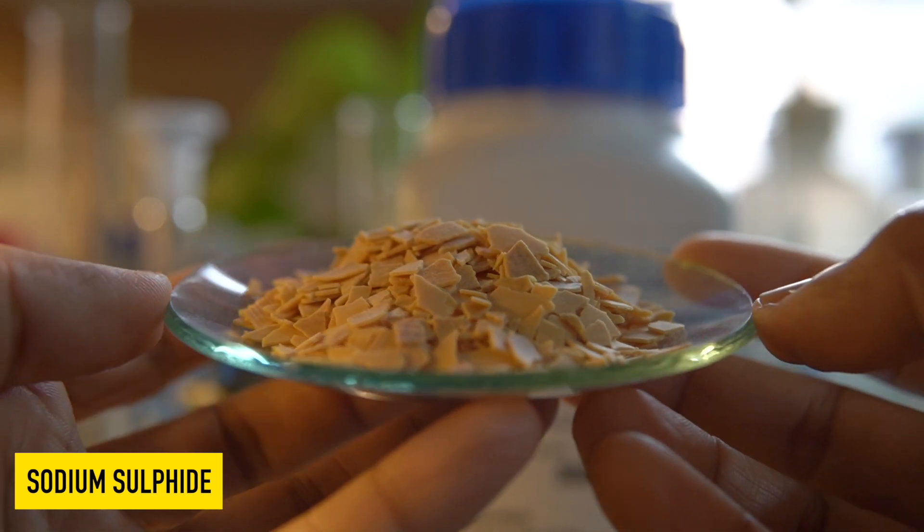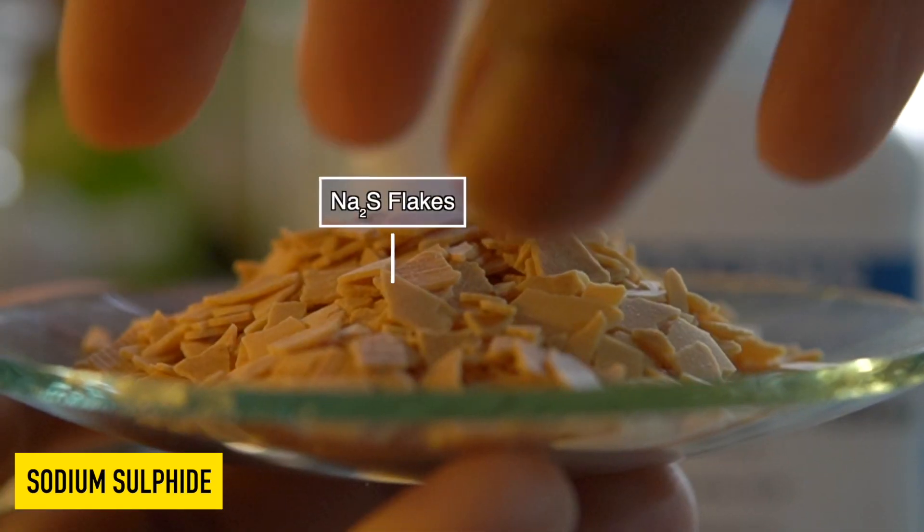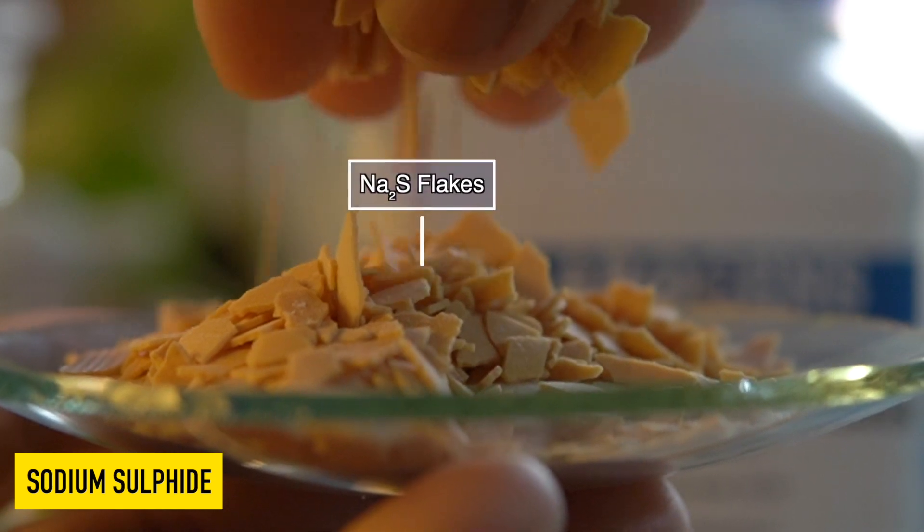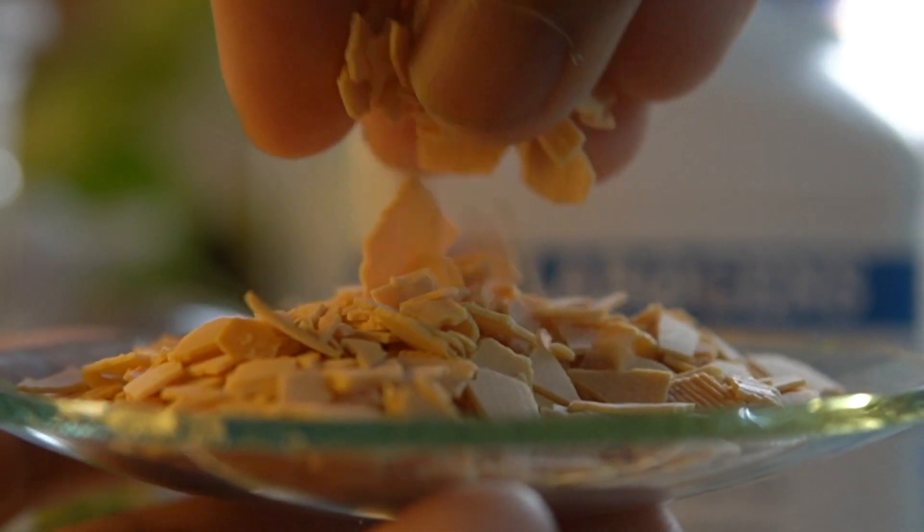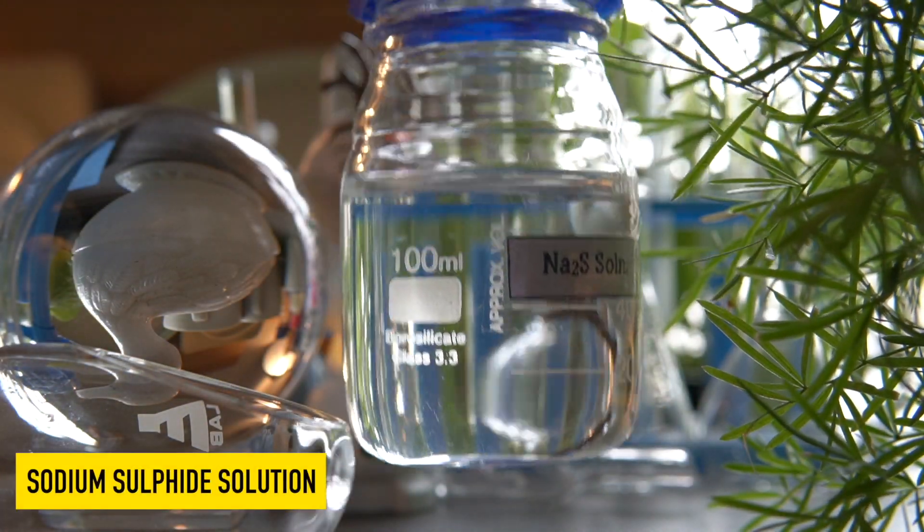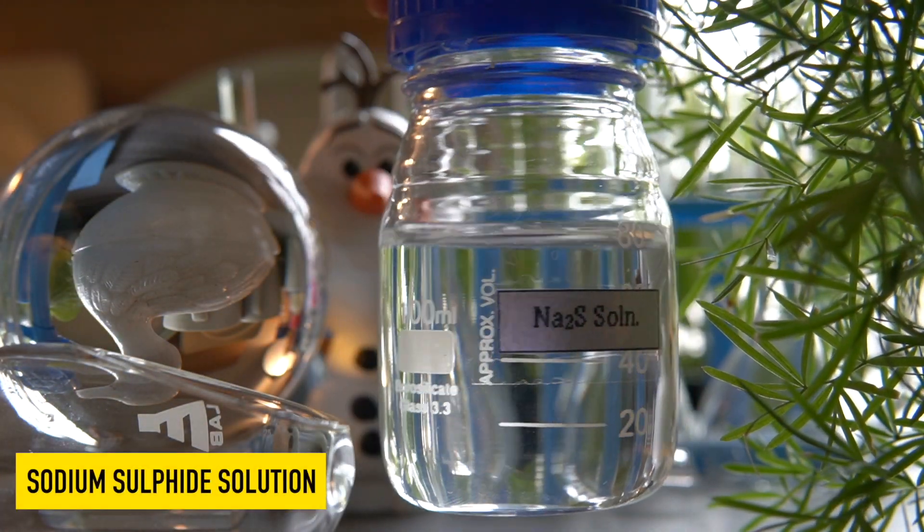These are sodium sulphide flakes. They are slightly yellowish in colour and highly soluble in water. They can easily dissolve in water to make a clear colourless solution.